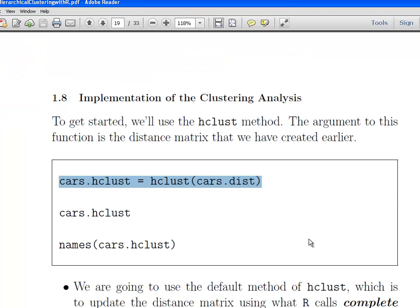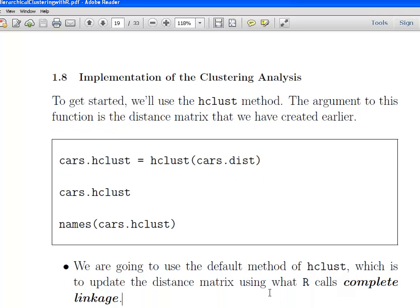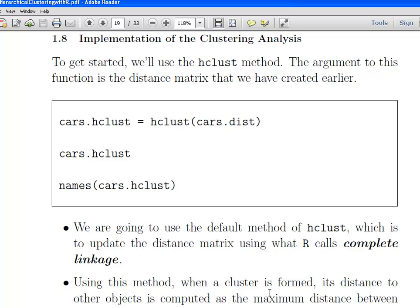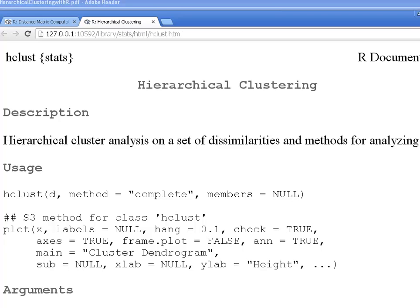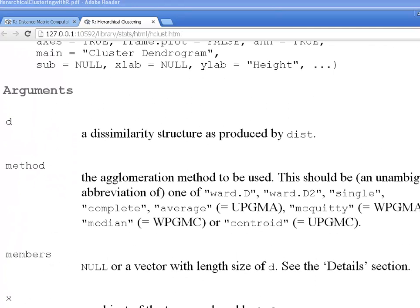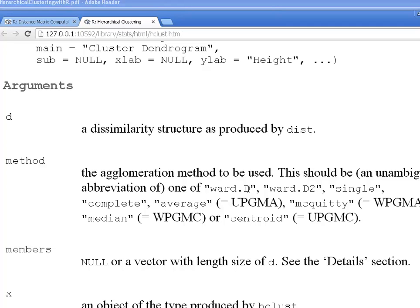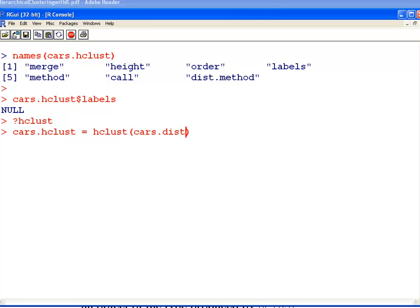Essentially there's not really much to look at yet. We're going for the default method of hclust, which is to update the distance matrix using complete linkage. Let's look at the help file and see what other linkage methods we can use. This matter of linkage is quite important and one of the hardest things to explain. There's other types of linkage methods. I might see how we might use Ward's D linkage.